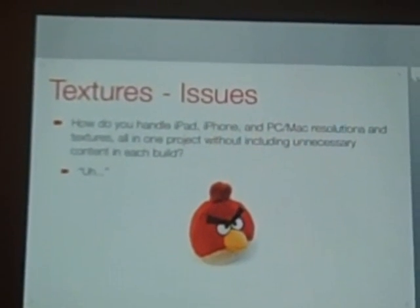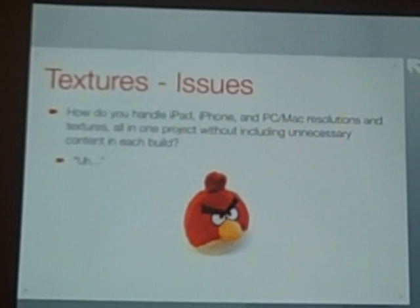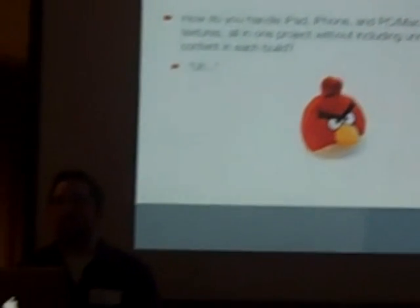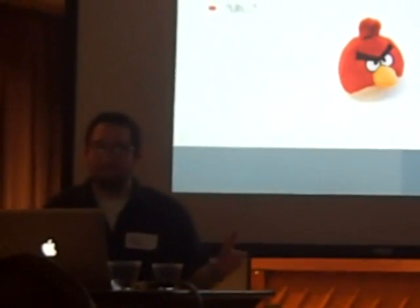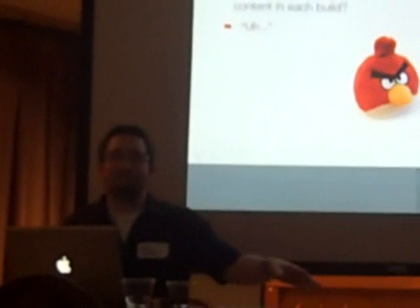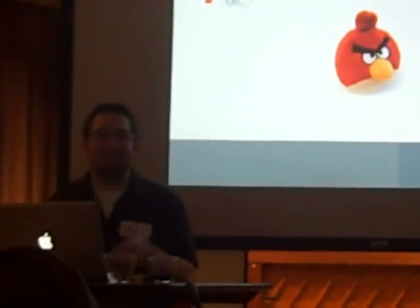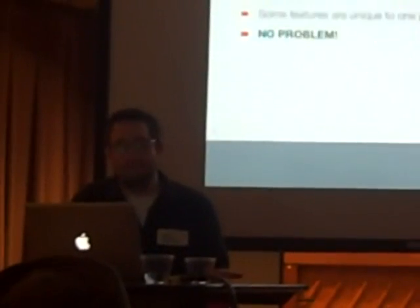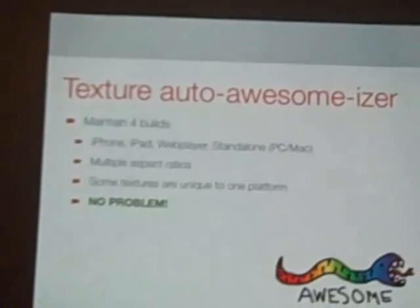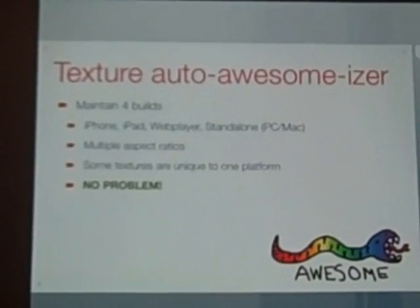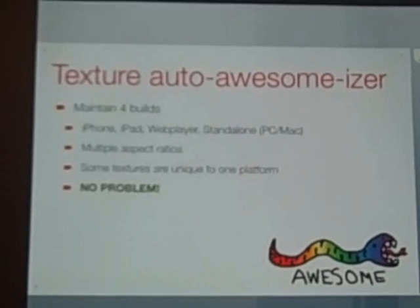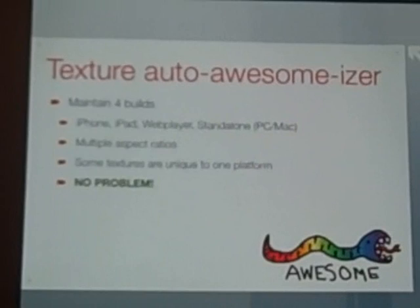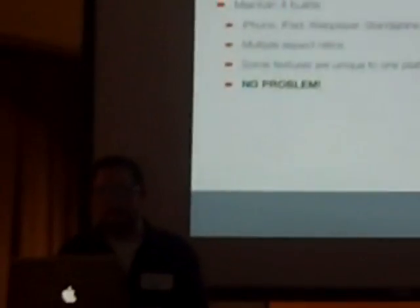Really the biggest question we had for this whole project is: how do you handle iPhone, iPad, Mac, and PC resolutions, textures, all in one project, without unnecessary content in each build? If you have an iPad texture at 1024x768 and you do an iPhone build, you don't want that huge texture taking up part of your 20 megs. We had to build something for that — I'm going to call it the texture auto-awesomizer. What this does is it maintains four separate builds: iPhone, iPad, web player, and standalone, handling all the multiple aspect ratios.